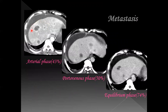This is a case of metastasis from colorectal carcinoma where you can see multiple peripherally enhancing lesions noted diffusely in the liver in the arterial phase, showing washout in the equilibrium phase. In the portal venous phase, peripheral enhancement is also present.